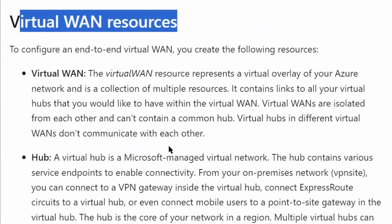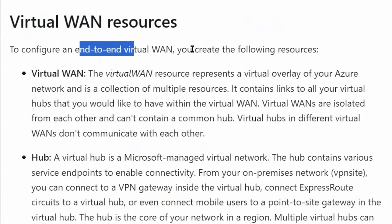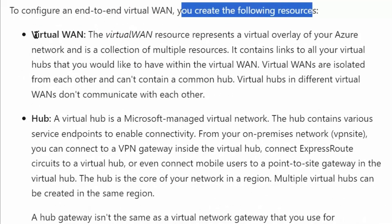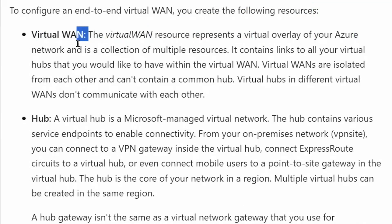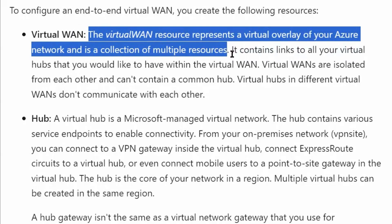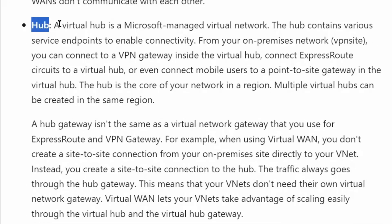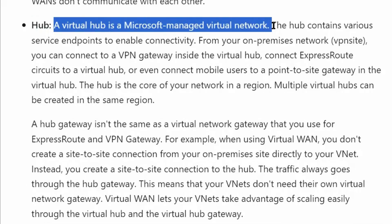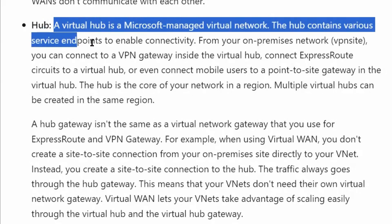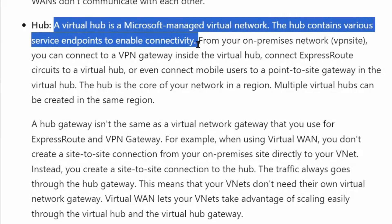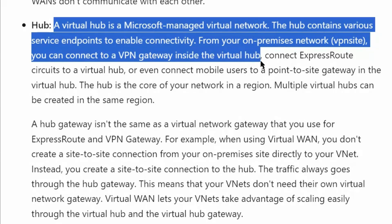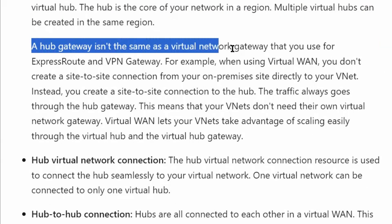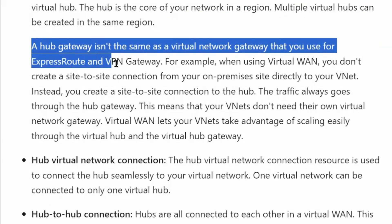To configure end-to-end virtual WAN, you create the following resources. First, virtual WAN — the virtual WAN resource represents a virtual overlay of your Azure network and is a collection of multiple resources. Next is the hub — a virtual hub is a Microsoft-managed virtual network. The hub contains various service endpoints to enable connectivity. From your on-premises network, you can connect to a VPN gateway inside the virtual hub. Note that a hub gateway isn't the same as a virtual network gateway that you use for ExpressRoute and VPN gateway.